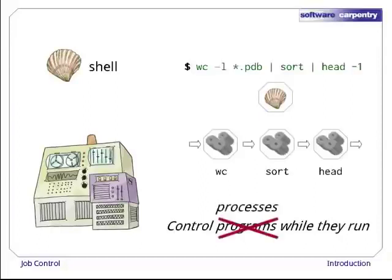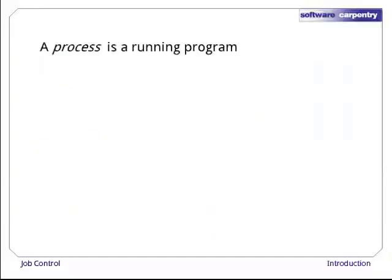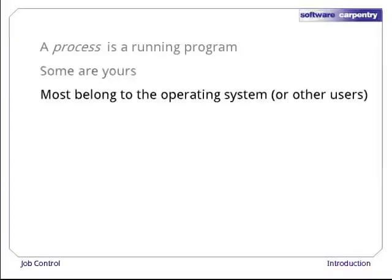We're looking at how to control a computer using a command line shell. We've seen how to use pipes to combine programs, which tells the shell to use the output of one as the input of the next. What we'll look at in this episode is how to control programs once they're running — what we really mean by that is how to control processes. A process is just a running program. Some of the processes on your computer are yours, running programs you explicitly asked for like your web browser.